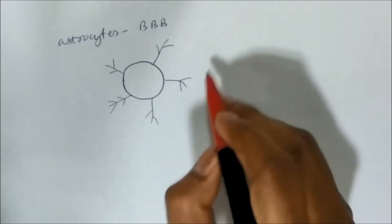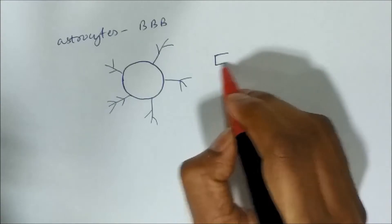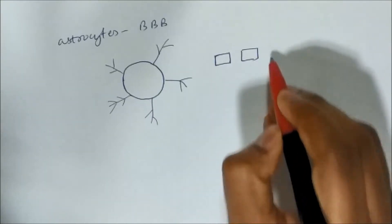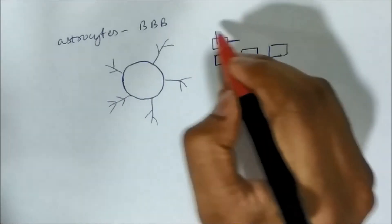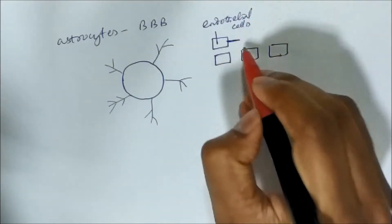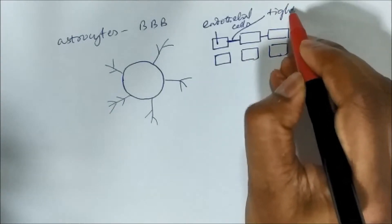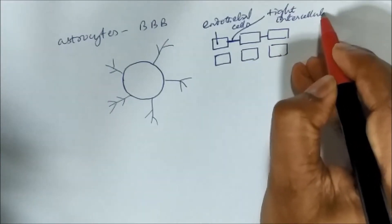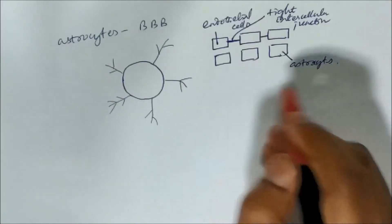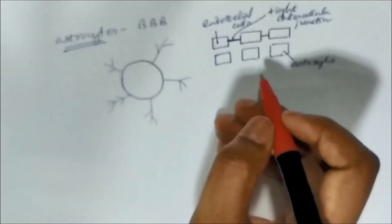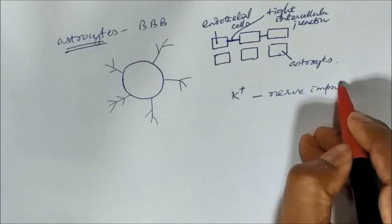Regarding the blood-brain barrier as previously discussed in drug distribution: the glial cells or astrocytes form part of it, along with the endothelial cells of blood vessels, with tight intercellular junctions between the endothelial cells — the characteristic feature of the blood-brain barrier. Astrocytes also have another function: they maintain a proper balance of potassium for generation of nerve impulses.